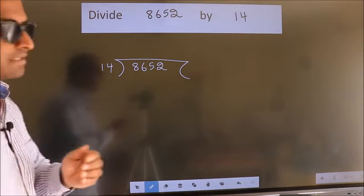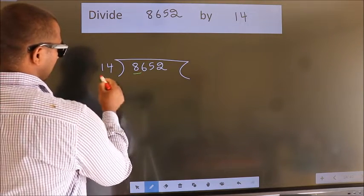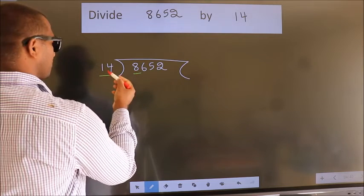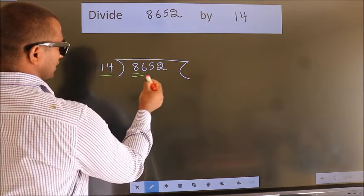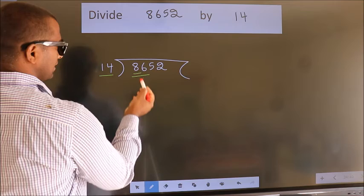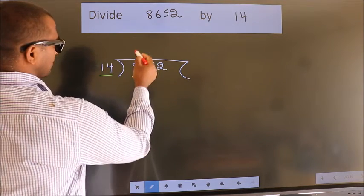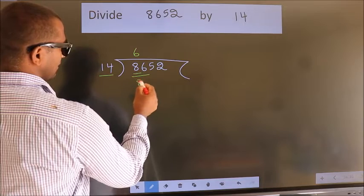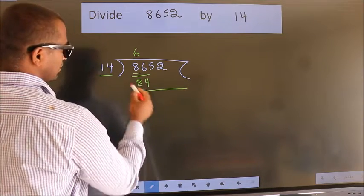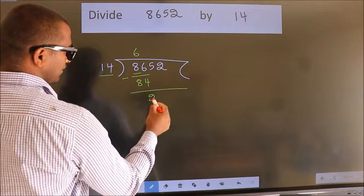Next, here we have 8, here 14. 8 smaller than 14. So, we should take two numbers, 86. A number close to 86 in 14 table is 14 6s 84. Now, we should subtract. We get 2.